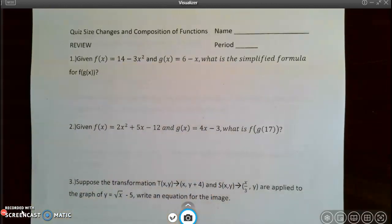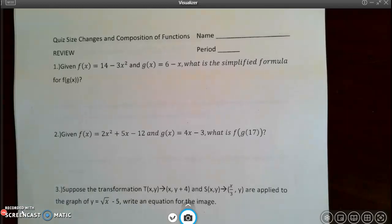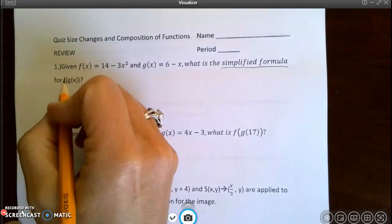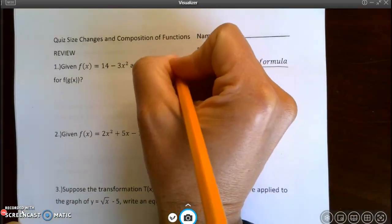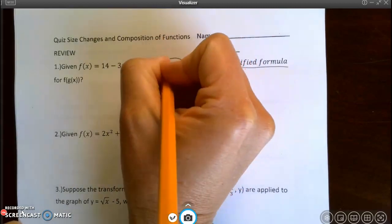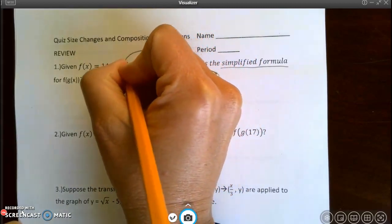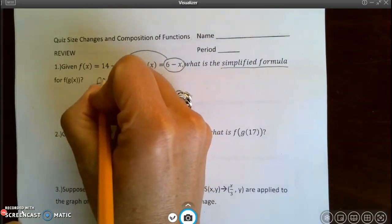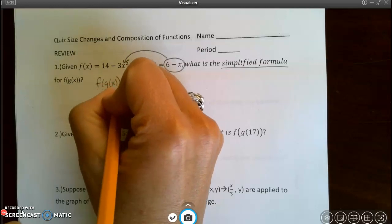This is the quiz review for size changes and composition of functions, video number one. My first question is a composition of functions question. Given the two functions f(x) and g(x), what is the simplified formula for f at g of x? I'm going to have to make sure it's simplified, which means I'm putting g of x into f.